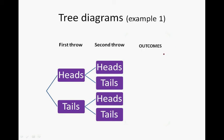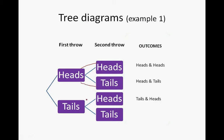The outcomes are: heads and heads — we can go heads then heads on this branch. Then we can have heads followed by tails. We can also get tails followed by heads, or tails followed by tails. So there are exactly four different outcomes when we flip a coin twice.